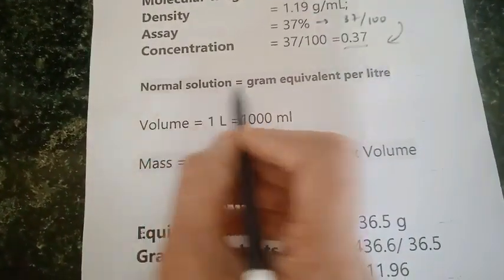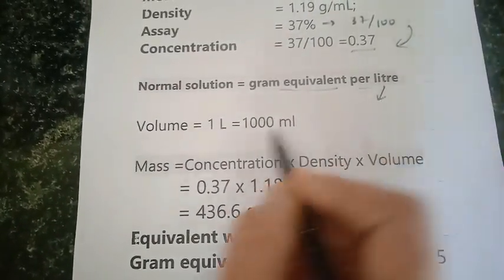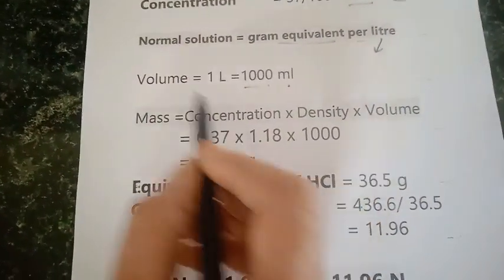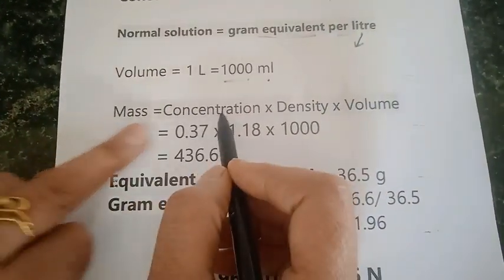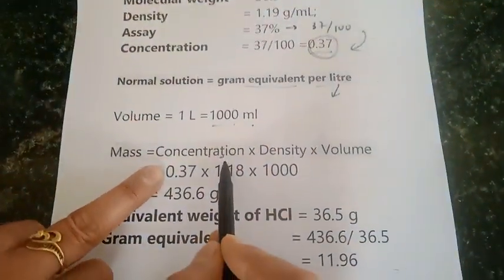So for that purpose we are going to calculate the normality and normality is gram equivalents per liter. One liter is equal to 1000 ml. So we are going to calculate the weight according to the 1000 ml of the solution.